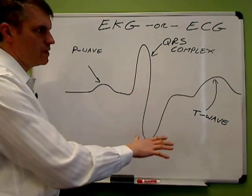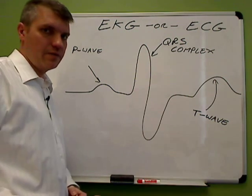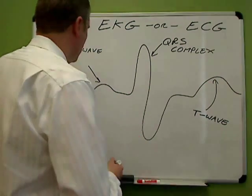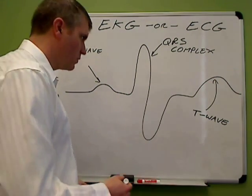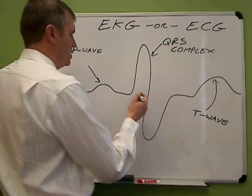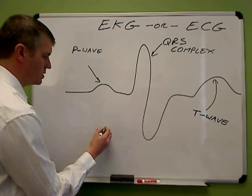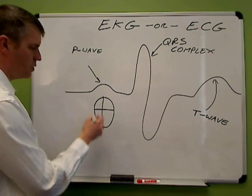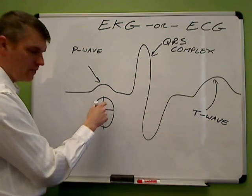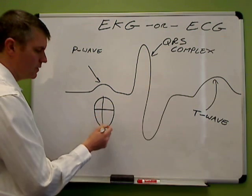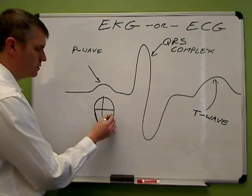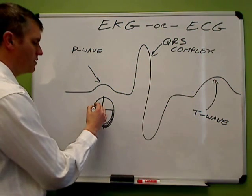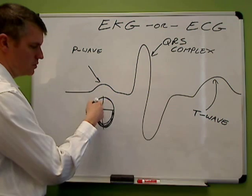To understand what each one of these means, you need to know a little bit of heart anatomy. The heart has four chambers — two chambers on the top and two chambers on the bottom. There's a lot more muscle down here on the bottom part in the ventricles, the two bottom chambers, and there's a bit of heart on these two top chambers.